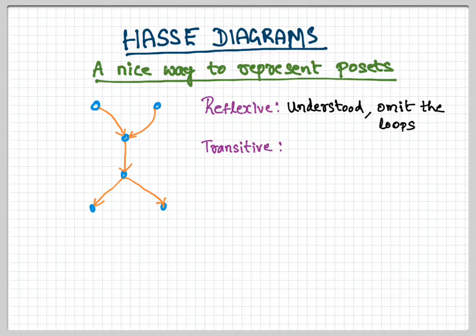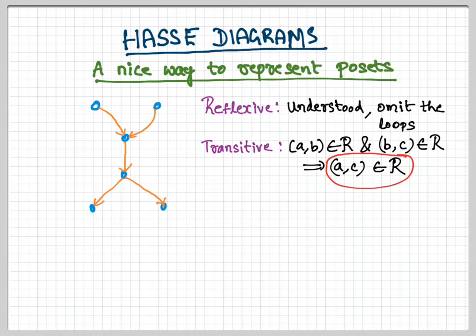Next, transitive. I know very well that when (A,B) belongs to R and (B,C) belongs to R, it is imperative that (A,C) belongs to R. So there's no need for me to put an edge between A and C. As long as there's an edge from A to B and B to C, it's implied that there has to be an edge—this task of including (A,C) in my relation R. This is what makes a Hasse diagram. It's understood, so I'm going to omit it.